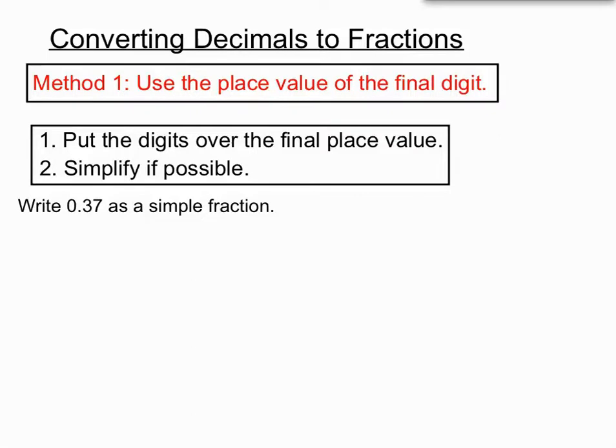We're asked to write 0.37 as a simple fraction. In 0.37, we recognize that the seven, that final digit, is in the hundredths column. So that allows us to write that 37 over 100. We're finding that hundred by checking out what column our final digit is in.